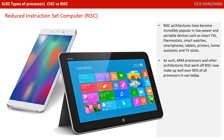RISC architectures have become incredibly popular in low power and portable devices such as smart TVs, thermostats, smart watches, phones, tablets, printers, home assistants, TV sticks, and many more. ARM processors and other architectures that work off of RISC now make up well over 90% of all processors in use today.